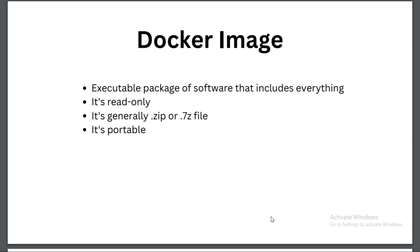The second property of an image is that it is read-only. Once an image is ready, you cannot change anything inside it. To make changes, you need to create a new image with another version. The third property is that it is like a zip or 7z file — a snapshot of your running container code.